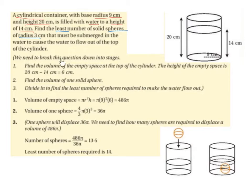We need to break this question down into stages. Part 1: We need to find the volume of the empty space at the top of the cylinder. We need to find the volume of this space here. The height of the empty space is going to be 20 minus 14, which is 6 cm.